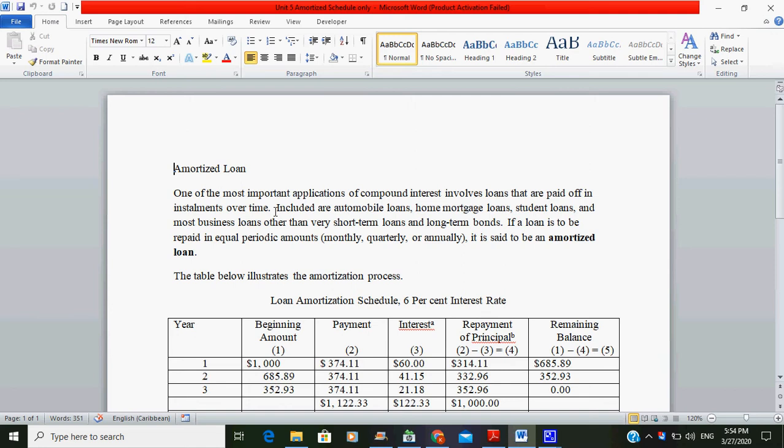One of the most important applications of compound interest involves loans that are paid off in installments over time. Included are automobile loans, home mortgage loans, student loans, and most business loans other than very short-term loans and long-term bonds. If a loan is to be repaid in equal periodic amounts—in this case monthly, quarterly, or annually—it is said to be an amortized loan.